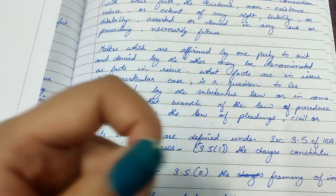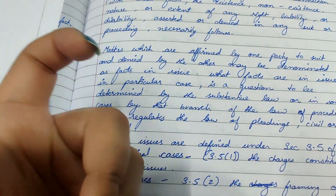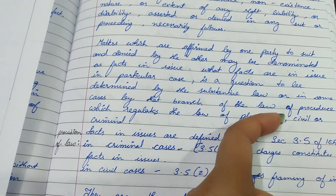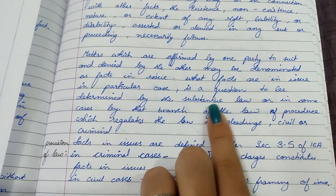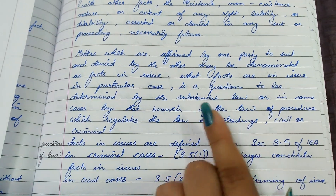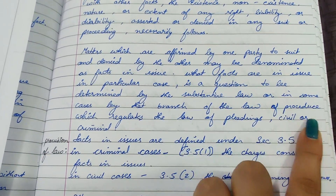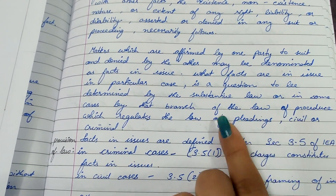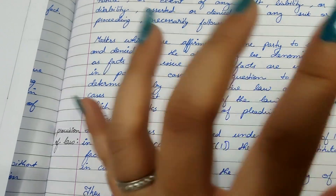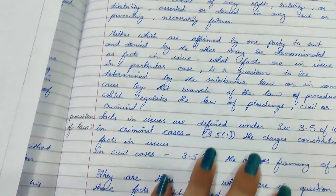Facts in issue represent a kind of substantive law — they are not procedural in nature, but there is a procedure to prove them. So it is a substantive law which can be proved through the branch of procedural law — either civil procedure or criminal procedure.